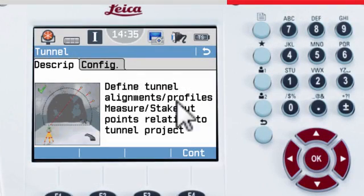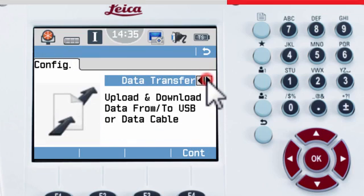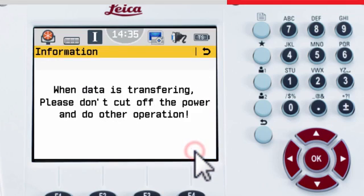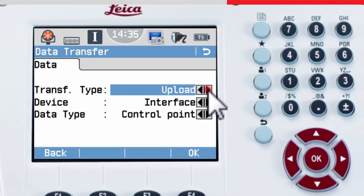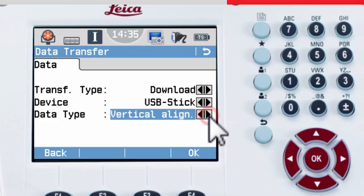After the field work is completed, you might want to export the measurements for further analysis or documentation reasons. From the main menu, go to data transfer. Choose to download to USB stick, for example. Choose which data type to download, in this case the profile scans, and then OK to transfer your data to the USB stick.